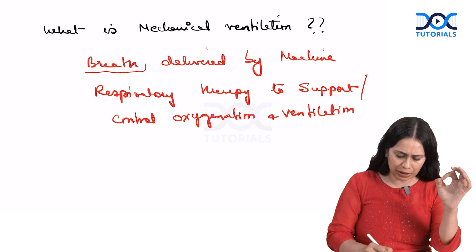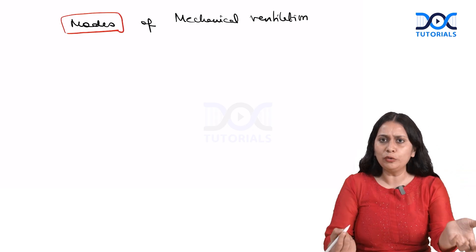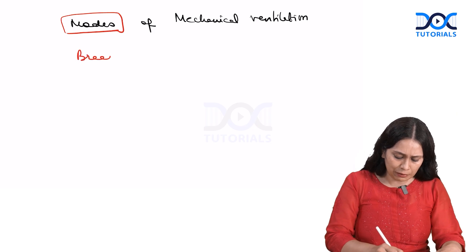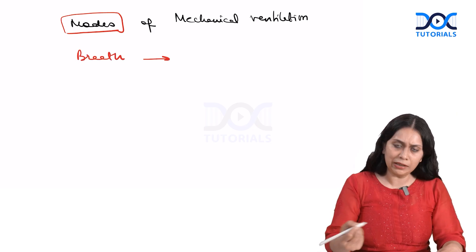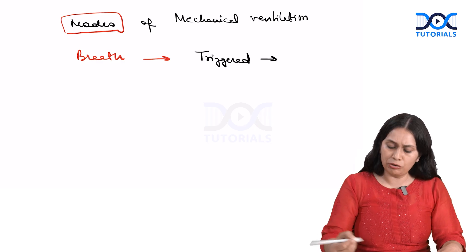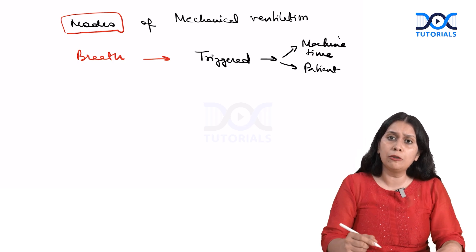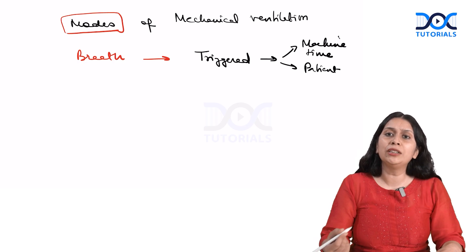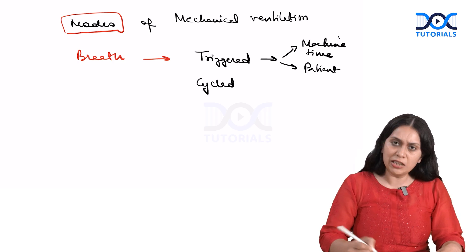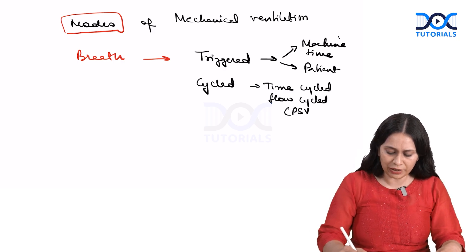How this breath is delivered to the patient depends upon the mode of mechanical ventilation. To understand the mode and how we select it, we need to understand what defines a mechanical breath. A mechanical breath is defined by how it gets triggered — either by the machine (time-triggered, controlled breath) or by the patient (patient-triggered, spontaneous or assisted breath). It is also defined by how it is cycled from inspiration to expiration — time cycle or flow cycle. Most modes are time-cycled, except PSV (pressure support ventilation), which is flow-cycled.